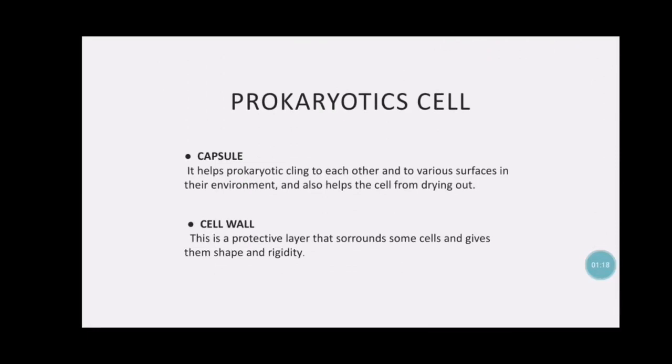Prokaryotic cell capsule. The capsule helps prokaryotic cells cling to each other and to various surfaces in their environment, and also helps the cell from drying out. Cell wall. The cell wall is a protective layer that surrounds some cells and gives them shape and rigidity.